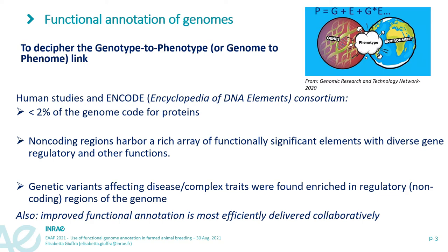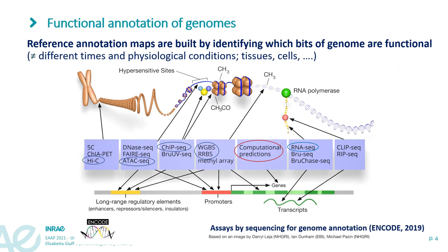The work of these consortia has underlined how improved functional annotation is most efficiently delivered collaboratively. Reference annotation maps of genomes are built by identifying which bits of genome are functional at different times, different physiological conditions, and using different tissues, cell populations, and single cells. The assays by sequencing, developed by ENCODE and other consortia, are continuously evolving and target different levels of genome complexity.